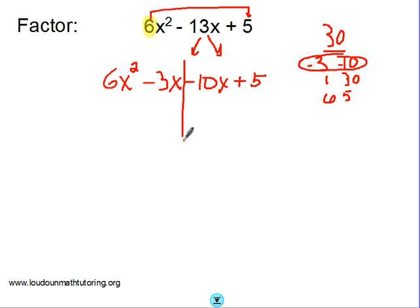So what you want to do is, this is called factor by grouping because you have four terms and you want to think of those each in two groups now. So look at this first group, these first two terms, and you're looking for a greatest common factor.